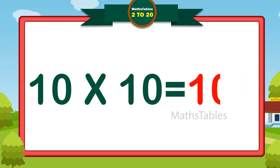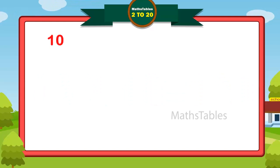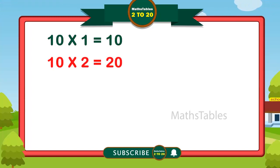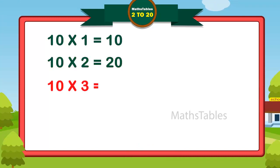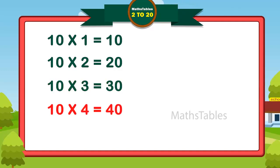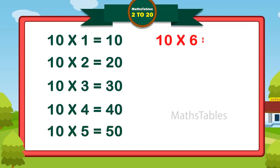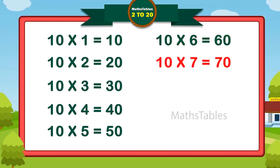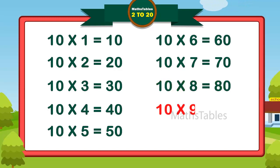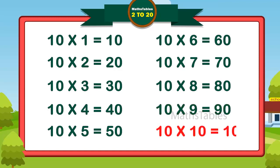10 tens are 100. 10 ones are 10. 10 twos are 20. 10 threes are 30. 10 fours are 40. 10 fives are 50. 10 sixes are 60. 10 sevens are 70. 10 eights are 80. 10 nines are 90. 10 tens are 100.